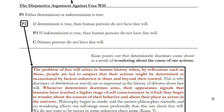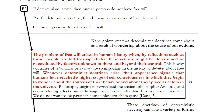The first point I want to make is one that Cain makes regarding how the problem of free will arises. If we think about why human beings ask whether we have free will, we can see how determinism can undermine our sense of it. Cain says: 'The problem of free will arises in human history when people are led to suspect that their actions might be determined or necessitated by factors unknown to them and beyond their control. Whenever determinist doctrines arise, their appearance signals that humans have reached a higher stage of self-consciousness, in which they begin to wonder about the sources of their behavior and their place as actors in the universe.'